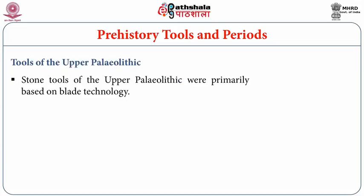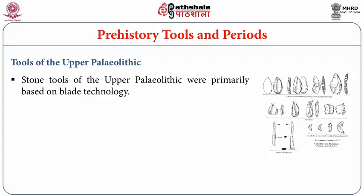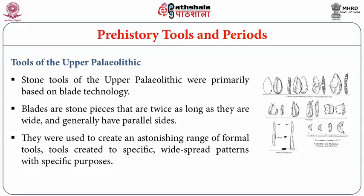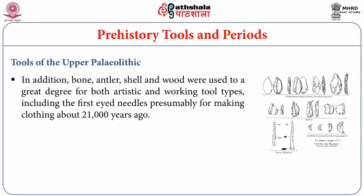Stone tools of the Upper Paleolithic were primarily based on blade technology. Blades are stone pieces that are twice as long as they are wide and generally have parallel sides. They were used to create an astonishing range of formal tools created to specific widespread patterns with specific purposes. In addition, bone, antler, shell and wood were used extensively for both artistic and working tool types, including the first eyed needles — presumably for making clothing — about 21,000 years ago. Tools of bone and stone, as well as microblades and backed blades, are illustrated here.